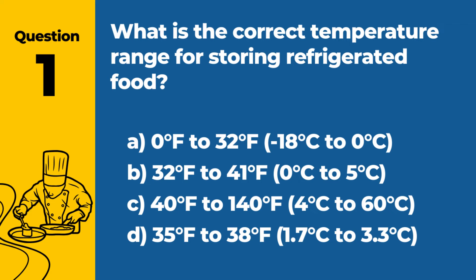Question 1. What is the correct temperature range for storing refrigerated food? a. 0°F to 32°F, -18°C to 0°C. b. 32°F to 41°F, 0°C to 5°C. c. 40°F to 140°F, 4°C to 60°C. d. 35°F to 38°F, 1.7°C to 3.3°C. Answer b. 32°F to 41°F, 0°C to 5°C. The correct temperature range for storing refrigerated food is between 32°F and 41°F, 0°C and 5°C, to slow bacterial growth.